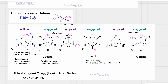Looking at the eclipsed conformations: conformation A would be highest in energy because the two big groups are next to each other, while C and E will be the same energy. Among the staggered conformations, B and F each have one gauche interaction and are the same energy. Conformation D would be lowest in energy because it is the staggered anti conformation, where the two big groups are opposite of each other — anti conformation is the lowest in energy.